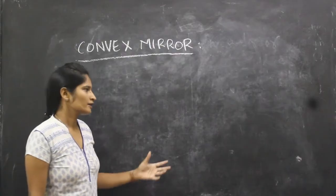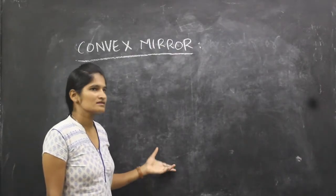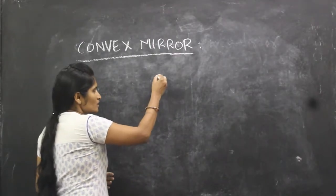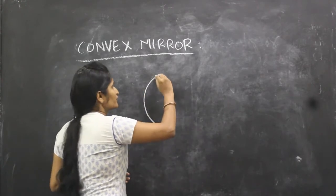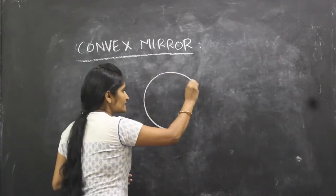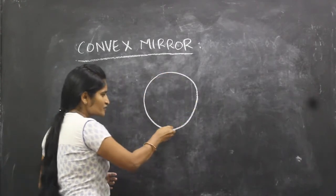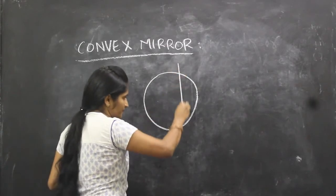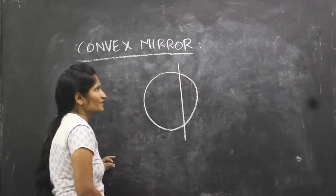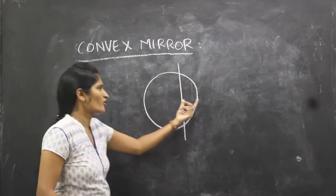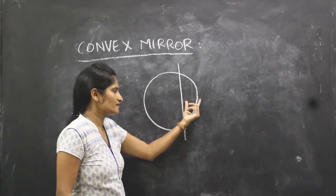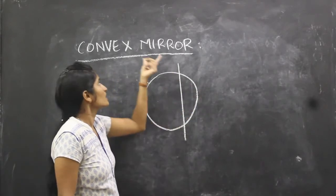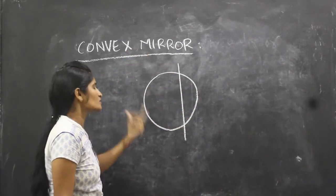First, we generally learn about convex mirrors. So what is a convex mirror? If you consider a sphere, a part of that sphere forms a curved surface. That curved surface is what we call a convex mirror.